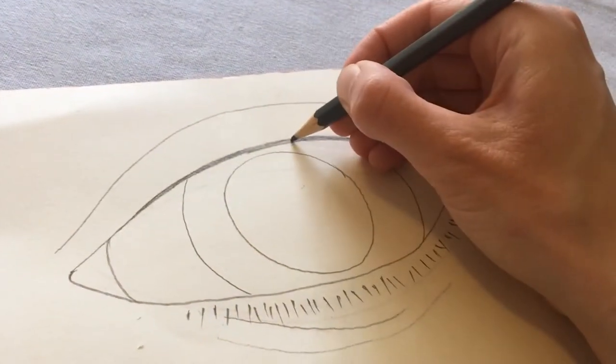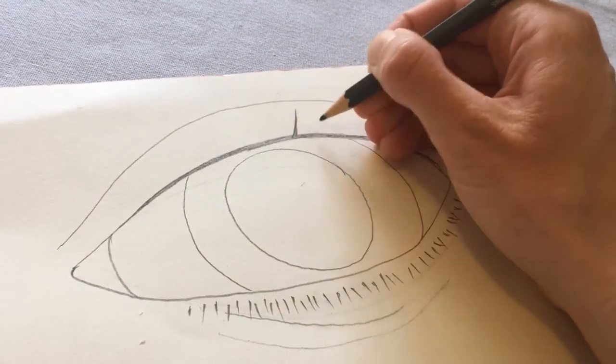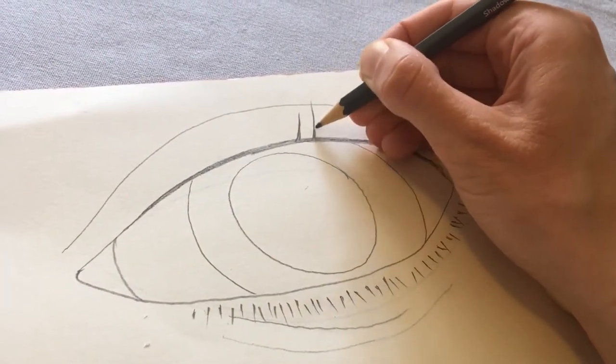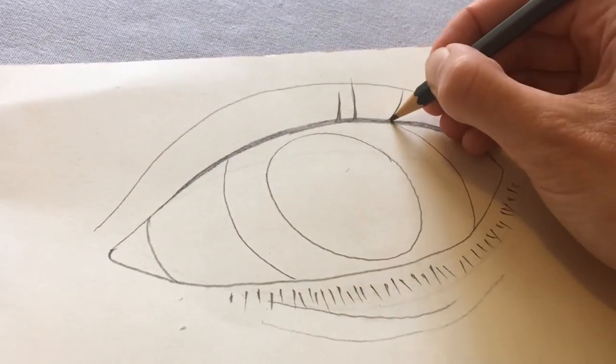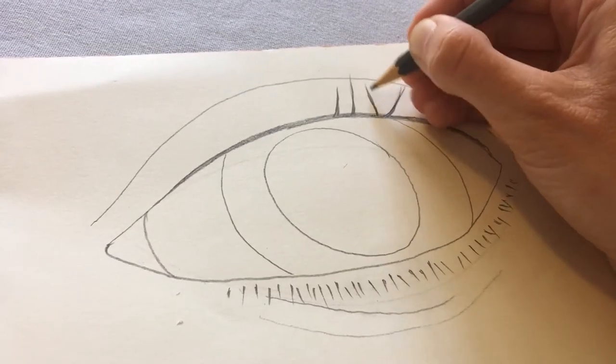Then I can see that some of my eyelashes are coming up like this. A little bit thicker towards the bottom. So I'm filling that in. They're all coming out in different angles. Some of them coming out wide. Some of them coming out straight up.